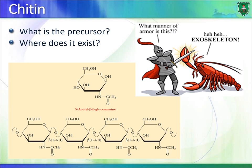This rigid structure forms the exoskeleton of organisms like cockroaches — that crunching sound when you step on one is chitin.